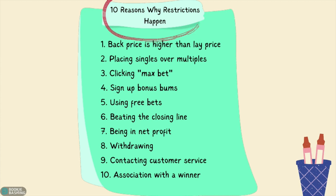Now let's look at the actions we take as bettors that lead to restrictions. First, taking any bet where the back price is higher than the lay price on the exchange - the typical profile of an arbitrage player seeking risk-free profit. Second, placing singles instead of multiples - a large-scale review of historical bookmaker data showed the single biggest indicator of a sharp customer over a recreational one was the tendency to play singles over multiples. Third, clicking the max bet button - the vast majority of bettors have no need for this, and those who click it are usually arbitrage players.